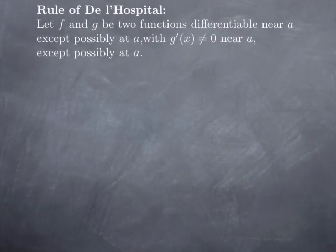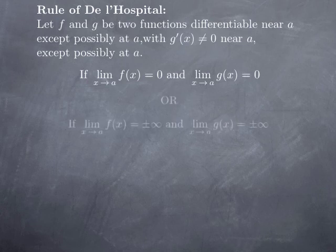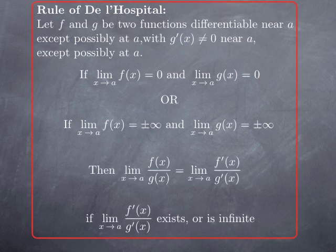Let's turn to the statement. The context is to take two functions — the top and the bottom in the undetermined limit — that are differentiable near a, except possibly at a, meaning they are differentiable on an open interval centered at a but possibly not at a itself. We want g'(x) to be non-zero near a, except possibly at a. We assume an undetermined form of type 0 over 0 — both limits of f and g at a are 0 — or infinity over infinity, so both limits at a are infinite. Then the conclusion is that this undetermined limit f/g at a equals the limit at a of f'/g'.